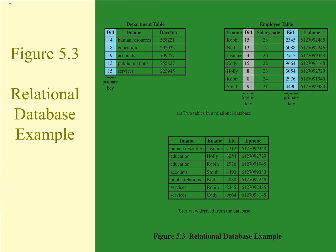Here is a little example of a relational database. At the top we have two tables. The primary key is the department ID — the department has a name and an account number, and the ID is unique. In the employee table we have the employee name, employee ID as the primary key. Each employee has a department associated with them. Notice that the department value is not unique — there are two 15s, meaning Robin and Cody are both part of department 15, which is Services.